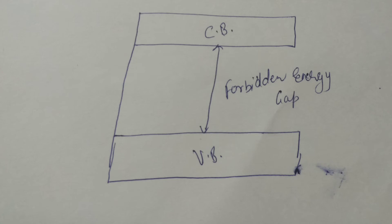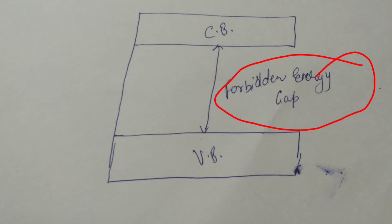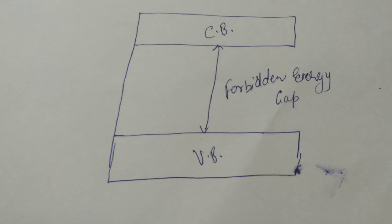The following figure shows the valence band, the conduction band, and the forbidden energy gap. Depending upon the size of the forbidden gap, insulators, semiconductors, and conductors are formed.